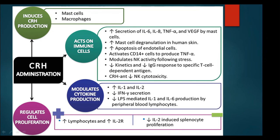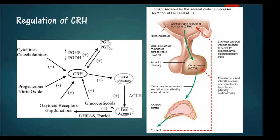When a person is administered CRH, it induces CRH production, acts on immune cells, modulates cytokine production, and regulates cell proliferation. CRH is positively regulated by cytokines, catecholamines, oxytocin receptors, glucocorticoids, and prostaglandins — specifically PGE, PGF, PGH, and PGD. CRH is negatively inhibited by progesterone and nitric oxide.